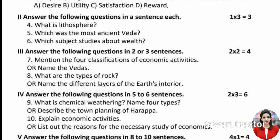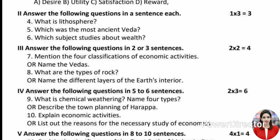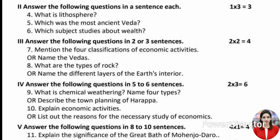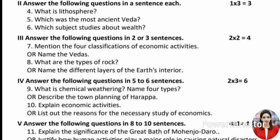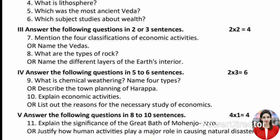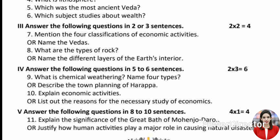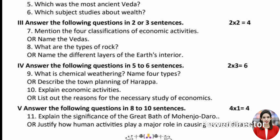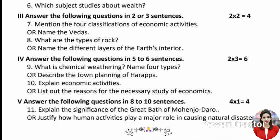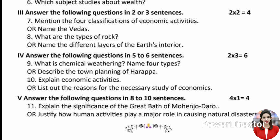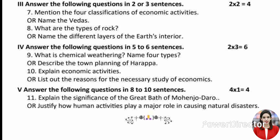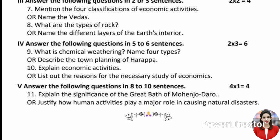Answer the following questions in 5 to 6 sentences. Question 9 and 10: Explain the significance of the Great Bath of Mohenjo-Daro. Answer the following in 8 to 10 sentences. Question 11: Explain the significance of the Great Bath of Mohenjo-Daro. Or, justify how human activities play a major role in causing natural disasters.